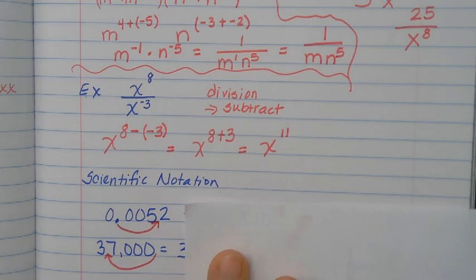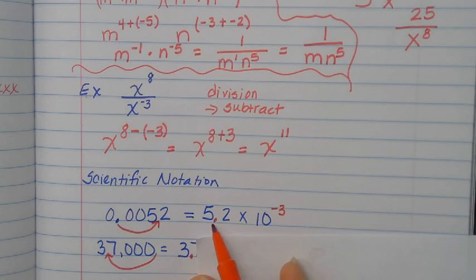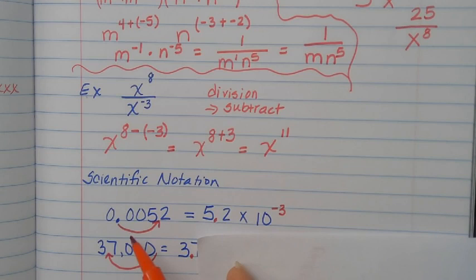So scientific notation. If I'm given 0.0052 and I want to write it in scientific notation, the first number always has the decimal right after the first digit. So I move the decimal to between the 5 and the 2, count how many places I moved it: 1, 2, 3 — and write times 10 to the negative 3. That's scientific notation.